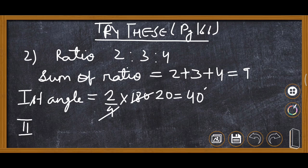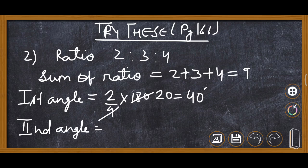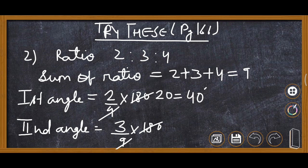Now second angle: it will be 3 upon 9 multiply 180, so it is 3 times 20 is 60 degrees.